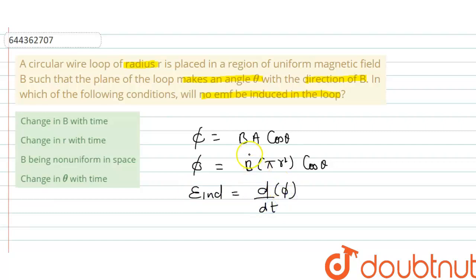rate of change of magnetic flux. So here you can see option change in B with time. If B changes with time, then magnetic flux changes and then EMF will be induced.